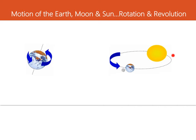So that's one year — all of our seasons take one year. Rotation takes one day. So rotation deals with day and night over a 24-hour period; revolution is one year, and it deals with the different seasons we see.